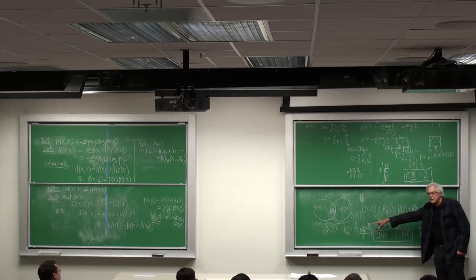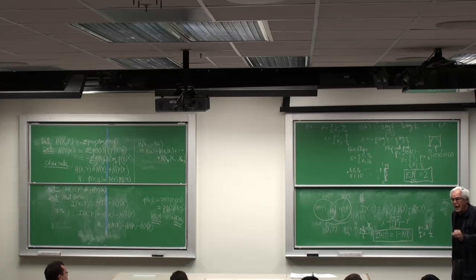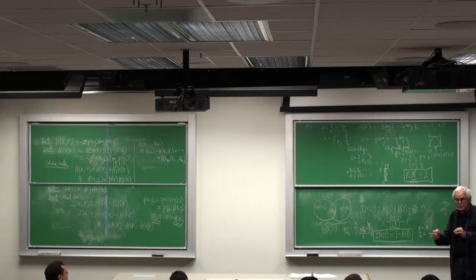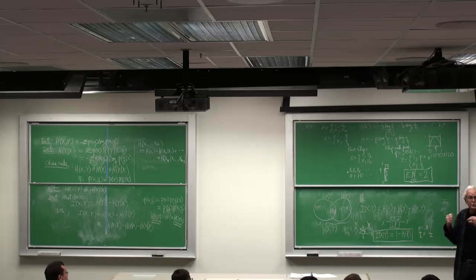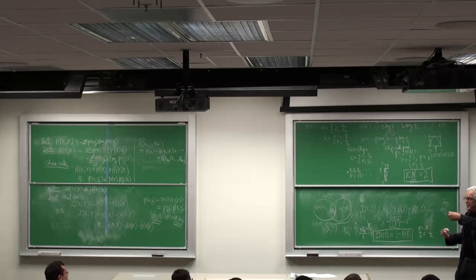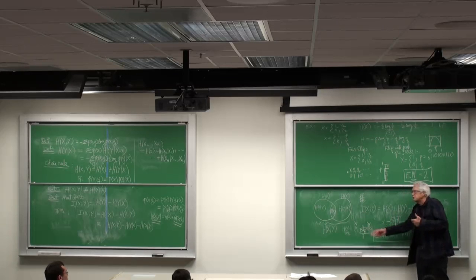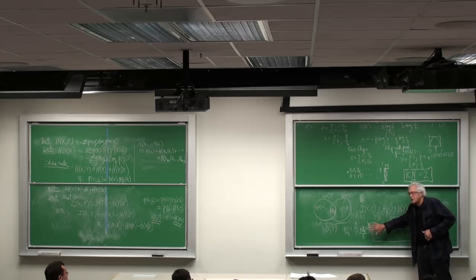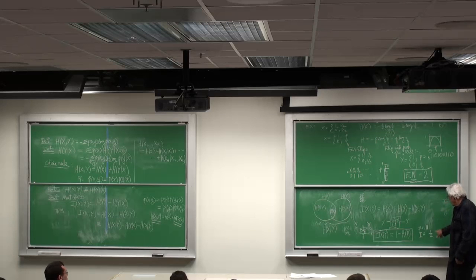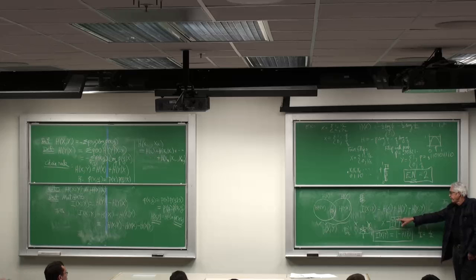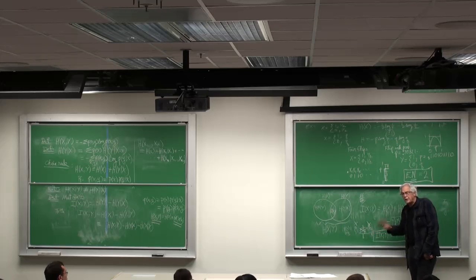And it says for this example, the distinguishability of the inputs is not one bit per use of the channel. It's half a bit per use of the channel. I have to use the channel twice to get a distinction equal to using a pure noiseless channel once. So the capacity of this channel with noise probability .11 is half a bit per use.